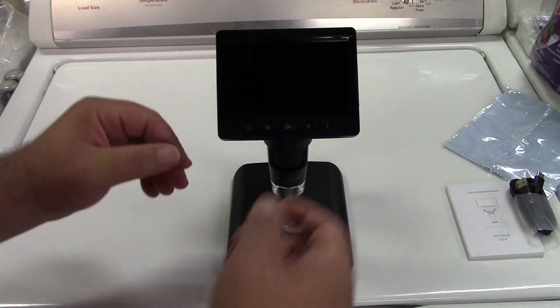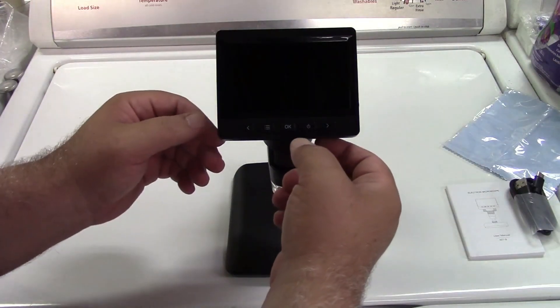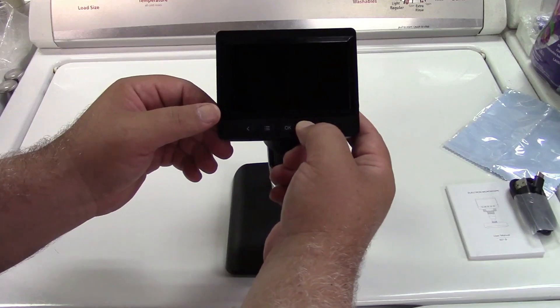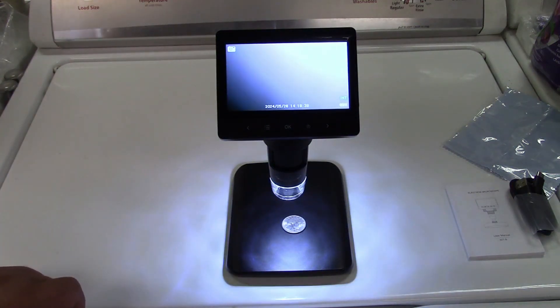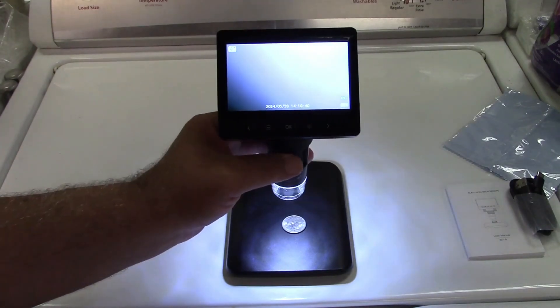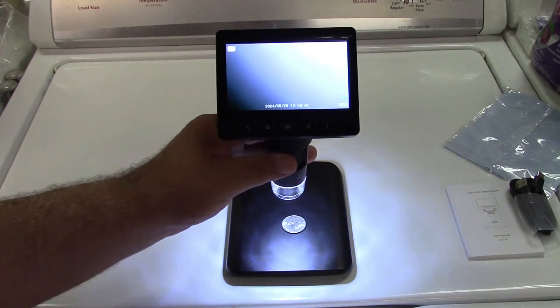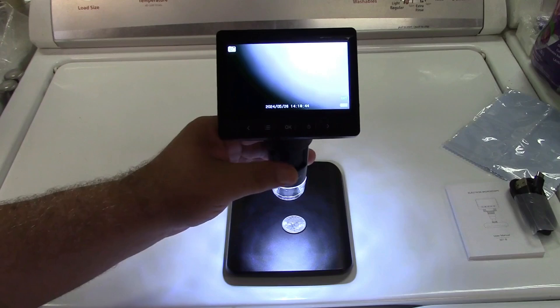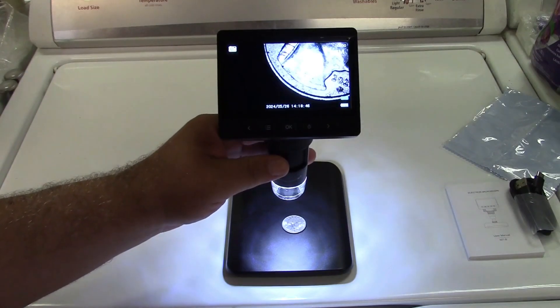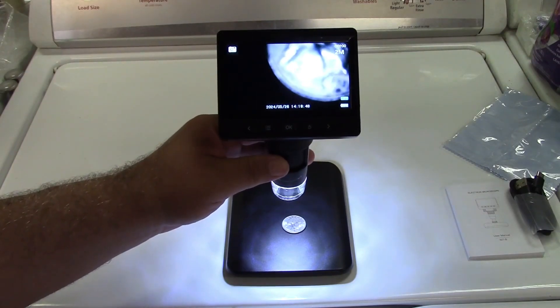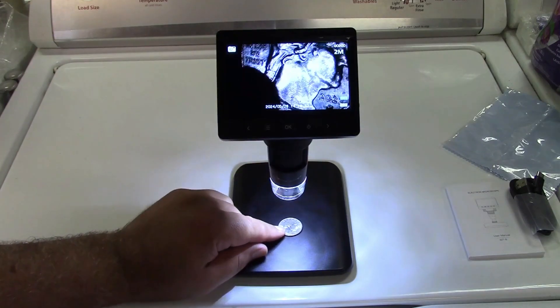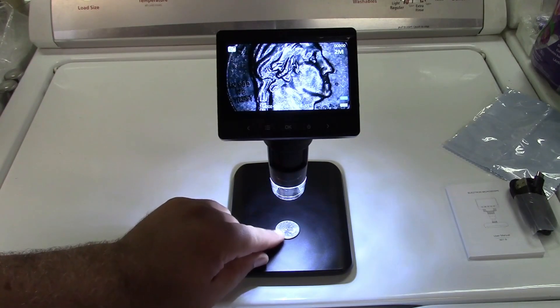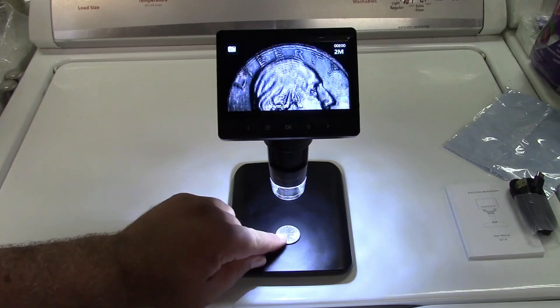Alright, I got a nickel in there. We'll start with that. And we're going to go ahead and turn it on. That's not great. So we're going to fix that by turning the focus wheel. Aha! And get it right in focus. There you go.